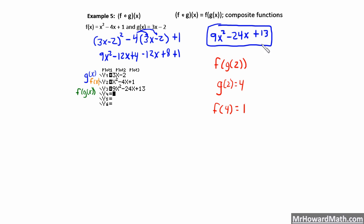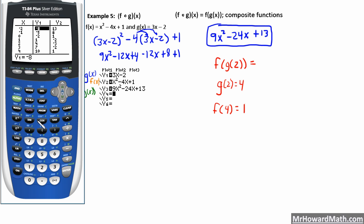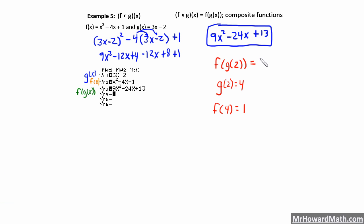We could find the same result a little faster. If we were asked for f of g of 2, we just take our f of g of x function — 9x squared minus 24x plus 13 — and shortcut this process. We find when x is 2 in our f of g of x function, because we're asked to find f of g of 2, and that result is our final answer. You'll see we get the same thing: 1. Our f of g of x function is in y3, so we go to the y3 table, find when x is 2, and y3 — our f of g of x — is equal to 1. Notice that's the same answer we got before.